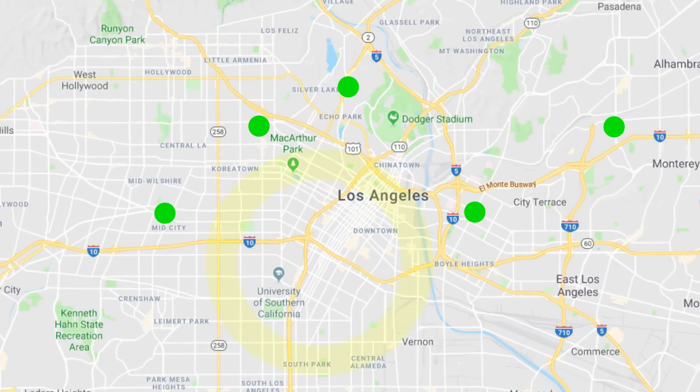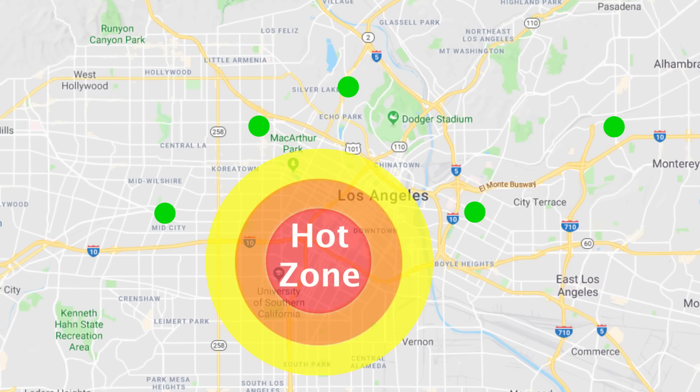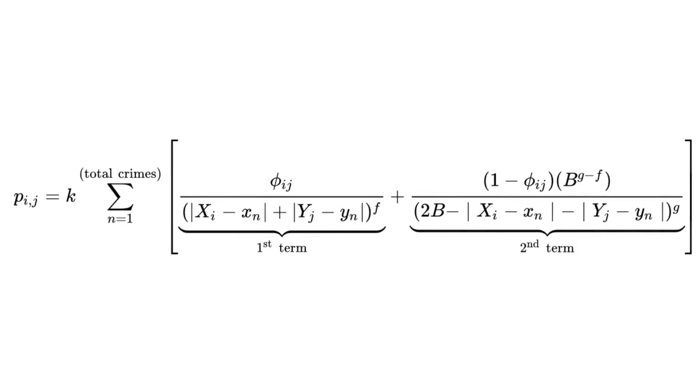So from the data, you can determine a quote, hot zone, which isn't too close or too far from the crime scenes, and has a high probability of the person living there. This is his equation for determining those probabilities.